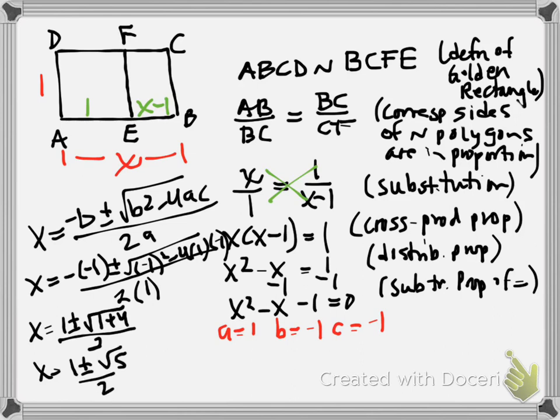That actually represents two potential answers: 1 plus radical 5 over 2 and 1 minus radical 5 over 2. For the first one, you would get positive because the square root of 5 is less than 3, and 1 plus 2 is 3. But for the second one, you would get a negative answer. So we actually have to throw him out because we can't have a negative ratio.